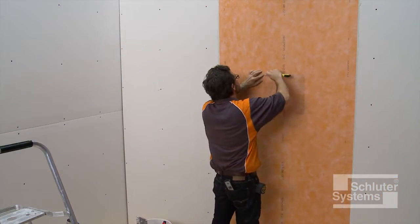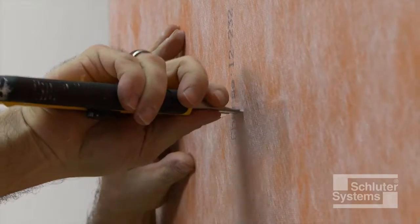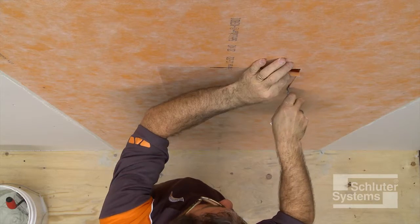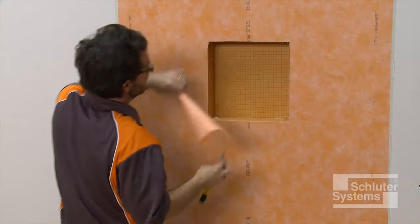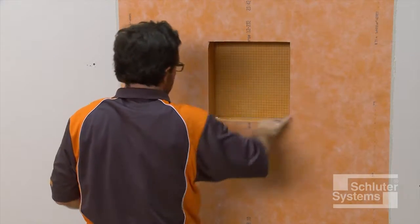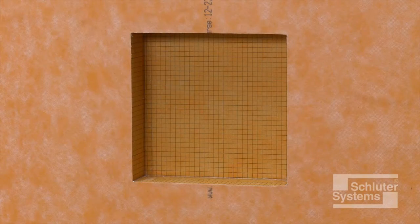The KERDI is cut along the shower niche opening. The shower niche flange is designed to provide a two-inch overlap. Tile can be installed immediately after the waterproofing is completed.